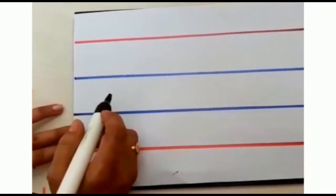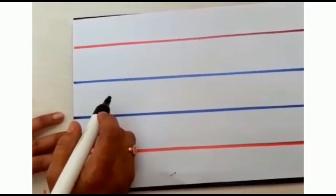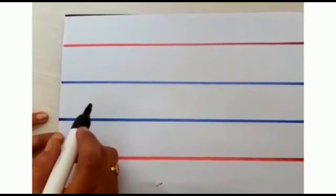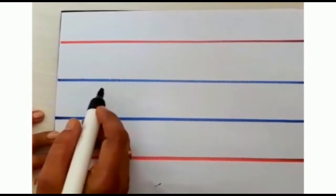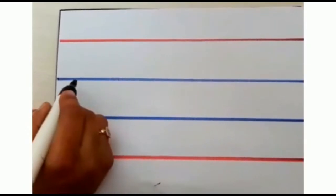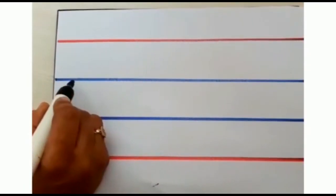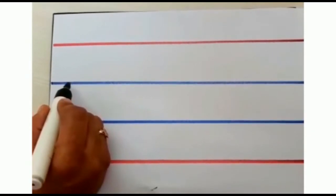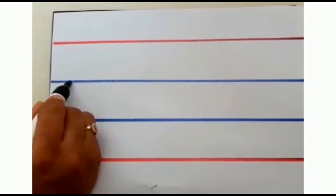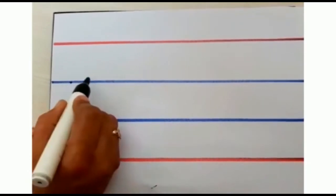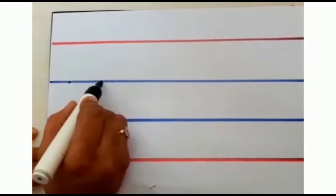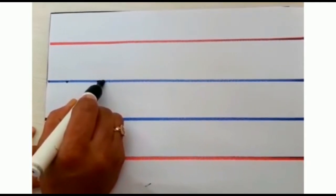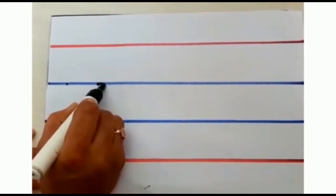See children, now I am going to show you how to write small m. Start from the second blue line. Here children, make a small curve, come down.